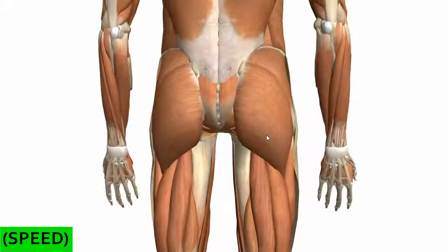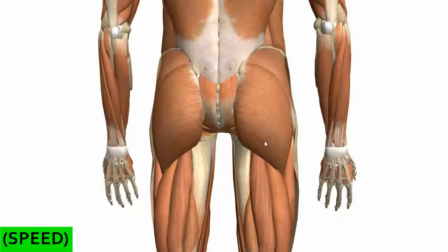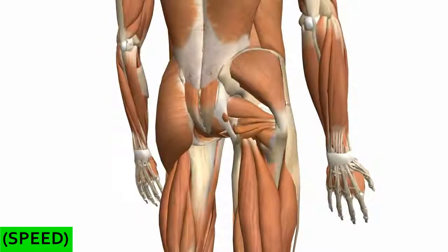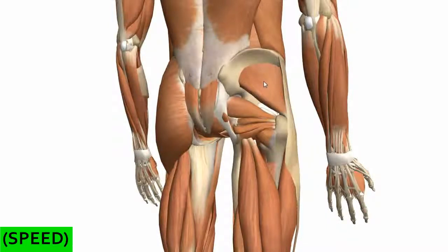There are three muscles in the superficial region. You've got the gluteus maximus here, which is innervated by the inferior gluteal nerve. Next you've got the gluteus medius, which lies just underneath — a fan-shaped muscle that abducts the femur. And you've got the gluteus minimus underneath, which is also an abductor, working together with the gluteus medius. So those are the three gluteus muscles: gluteus maximus, medius, and minimus.